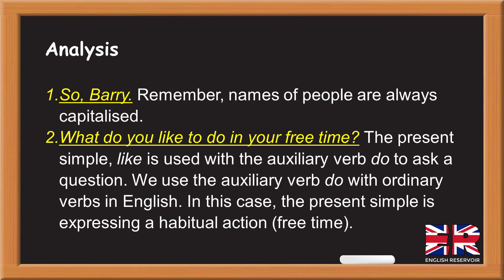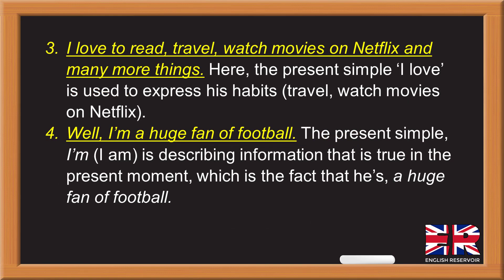Analysis. One: 'Barry' — remember, names of people are always capitalized. Two: 'What do you like to do in your free time?' The present simple 'like' is used with the auxiliary verb 'do' to ask a question. We use the auxiliary verb 'do' with ordinary verbs in English. Here, the present simple is expressing a habitual action — free time. Three: 'I love to read, travel, watch movies on Netflix and many more things.' The present simple 'I love' is used to express his habits.